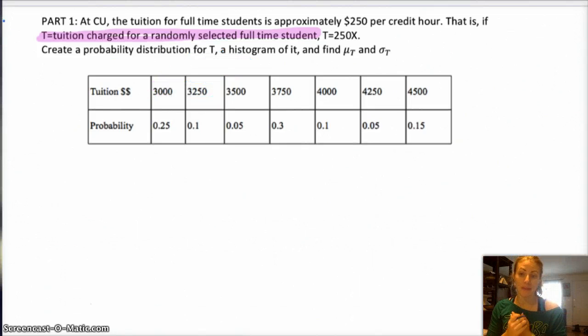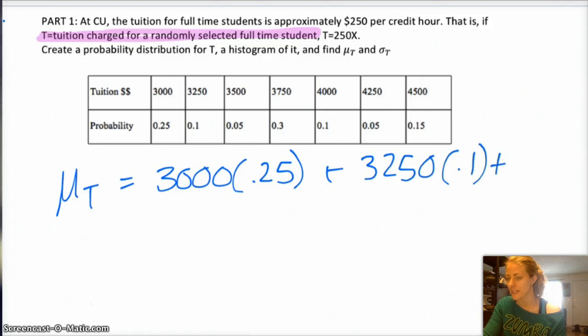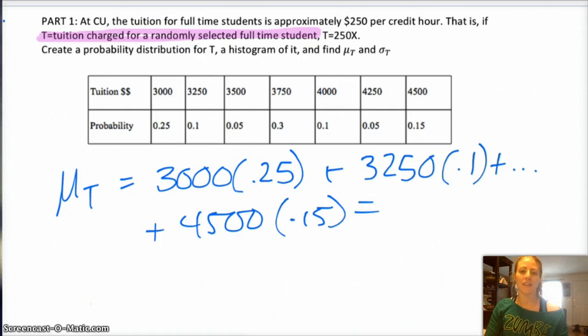So, here's the problem. If you don't know how linear transformations work, you have to recalculate the mean and standard deviation, which means, again, I got to do mu sub t is 3,000 times 0.25 plus 3,250 times 0.1 plus dot dot dot plus the last one plus 4,500 times 0.15, right?